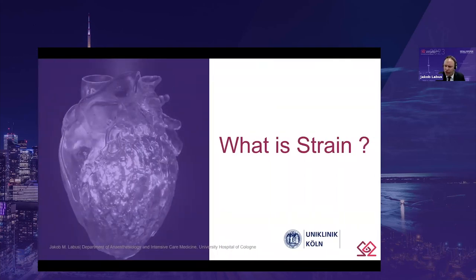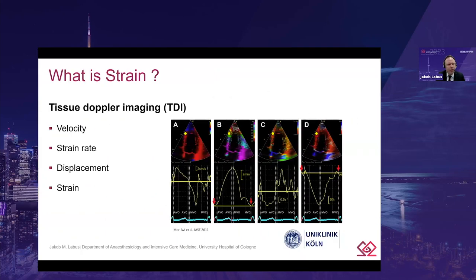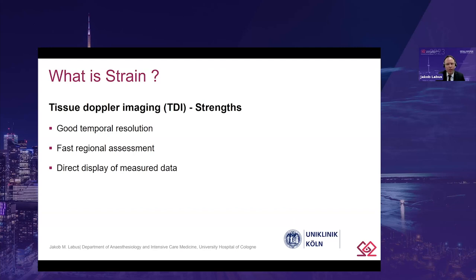What is myocardial strain? Strain is a dimensionless measurement describing a deformation of a structure, typically lengthening or shortening between two time points — for example, end-systole and end-diastole — and this deformation is expressed as a percent of initial length. In the early days of echocardiography strain analysis, color Doppler and tissue Doppler were used to measure myocardial velocity gradients along a scan line, integrated to deformation values such as displacement or strain at individual defined points of the myocardium.